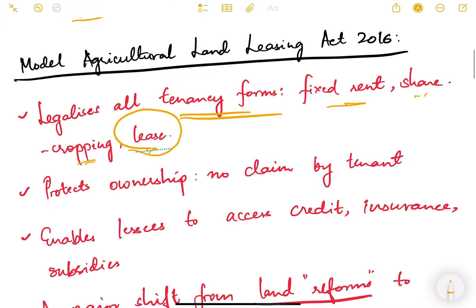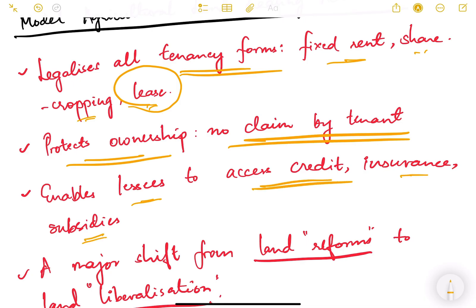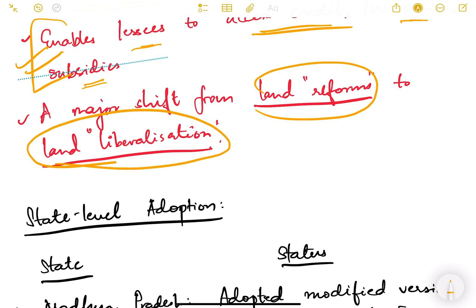It protects ownership with no claim by the tenant on the land. Sometimes a tenant who has stayed for 10 or 20 years tries to claim possession and ownership even without being the legal owner — this act protects against that. It also enables lessees to access credit, insurance, and subsidies. Various scheme benefits can be accessed through a formal tenancy agreement — representing a major shift from land reforms to land liberalization.